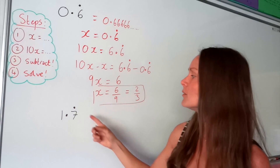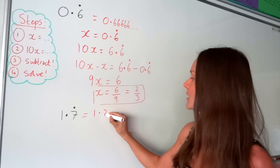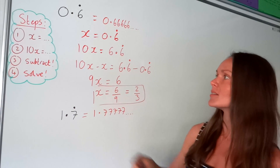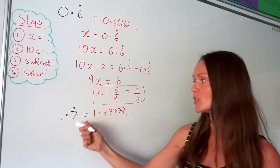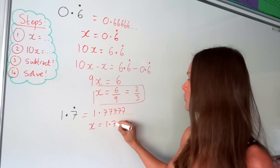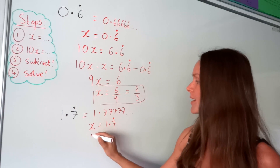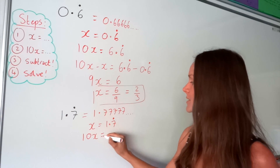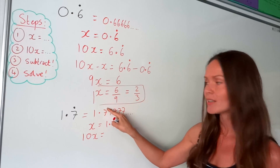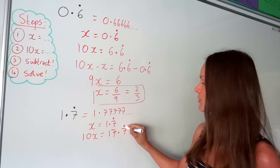I'm going to do exactly the same thing for the next one. Remember that the dot is above the 7, so this number is the same as 1.777 with those 7s never ending. Step number 1 is to put our original number equal to the letter x, so x equals 1.7 recurring. Then step number 2 is to calculate 10x — multiplying both sides by 10, so the decimal moves one place to the right, leaving me with 17.777, which is 17.7 recurring.